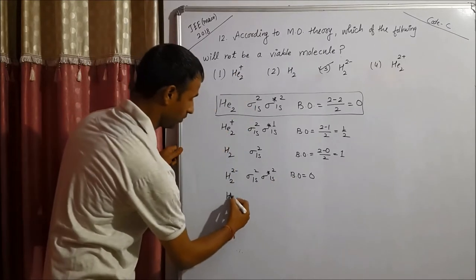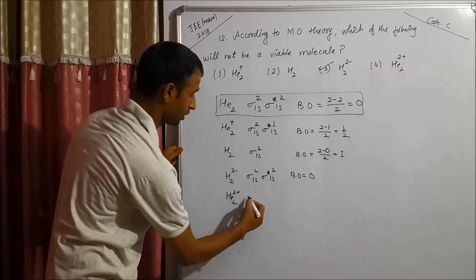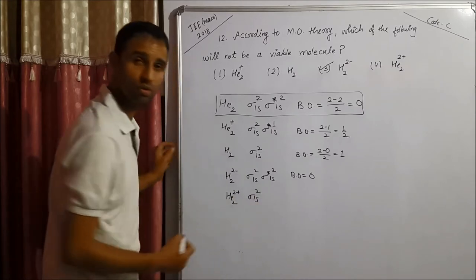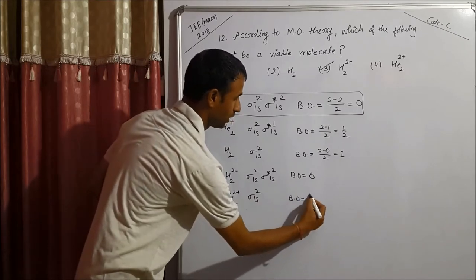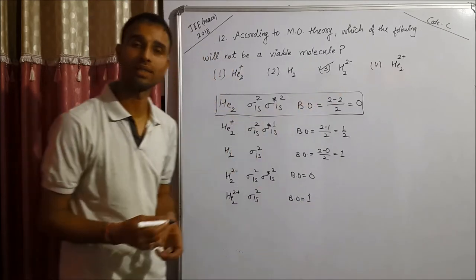In case of helium 2 positive, it is just like H2 molecule, sigma 1s2. Bond order is 1. That is why the right answer is 3.